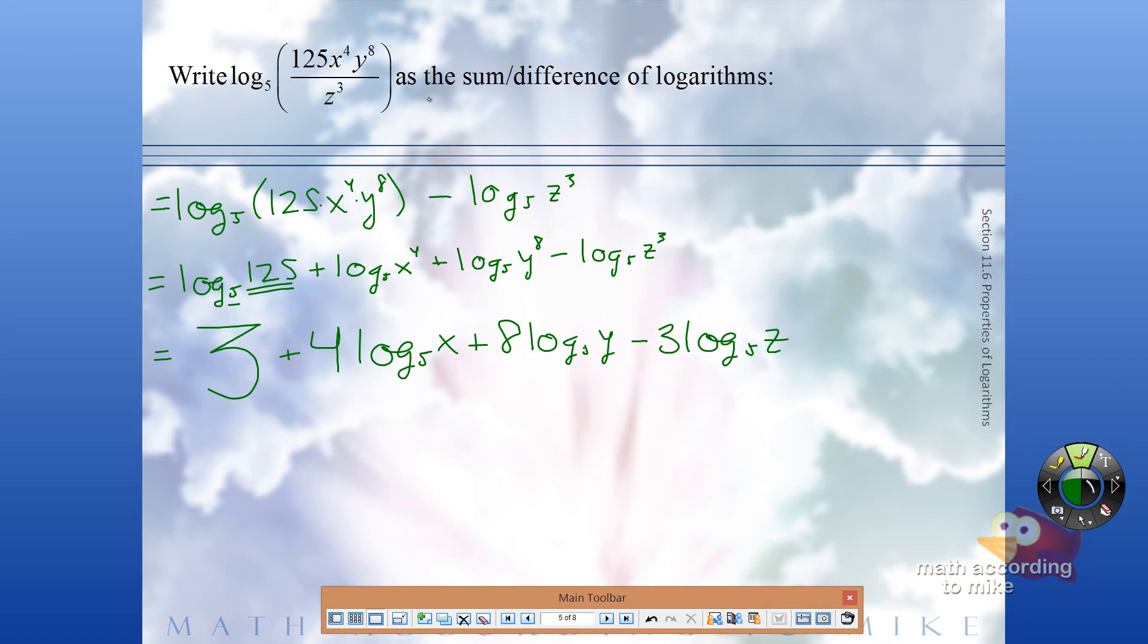So when it says write it as the sum or difference of logs, that means you want to get down to where all of the exponents are 1, and you're just adding or subtracting logarithms, possibly with coefficients in front.